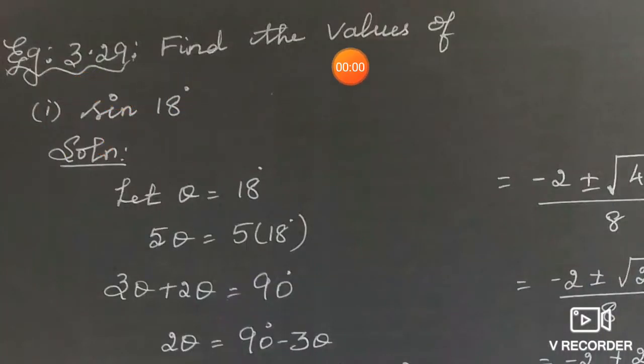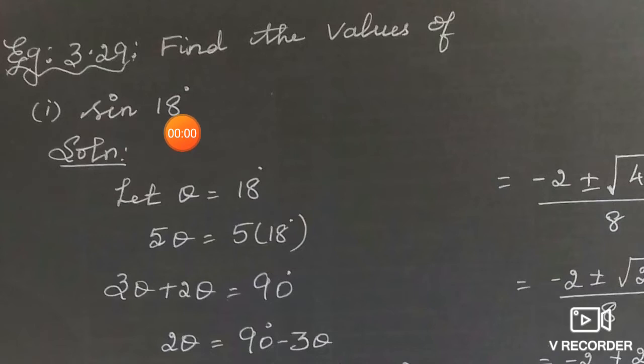Example 3.29: Find the values of sin 18°, 0°, 30°, 45°, 60°, and 90°. These are known angles — I know the trigonometric function values for these. 18° is a special angle, so let us find out how to determine its value.